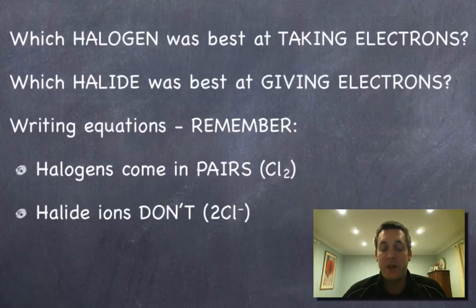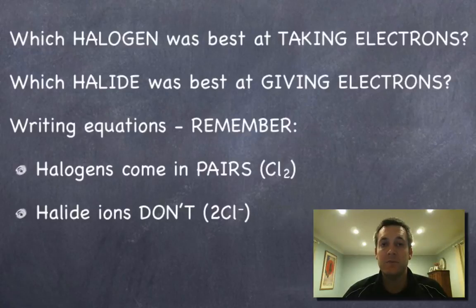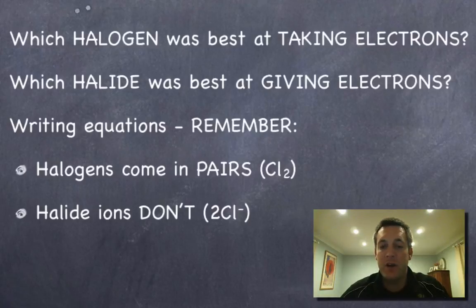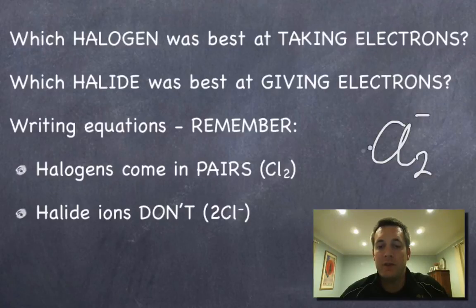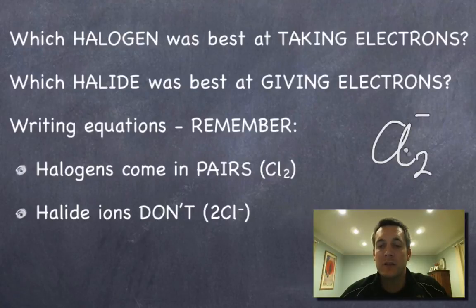The last thing to mention is about writing equations. Compared to metal displacement reactions where metals were always single atoms, halogens always come in pairs — so we write Cl₂, Br₂, I₂. But their ions don't come in pairs: we never write Cl⁻ twice as a single formula. We can have two separate chloride ions — that's different from two chlorine atoms joined together with a negative charge. The molecules with no charge always have a subscript 2, meaning two atoms joined together, while the ions are always separate species.